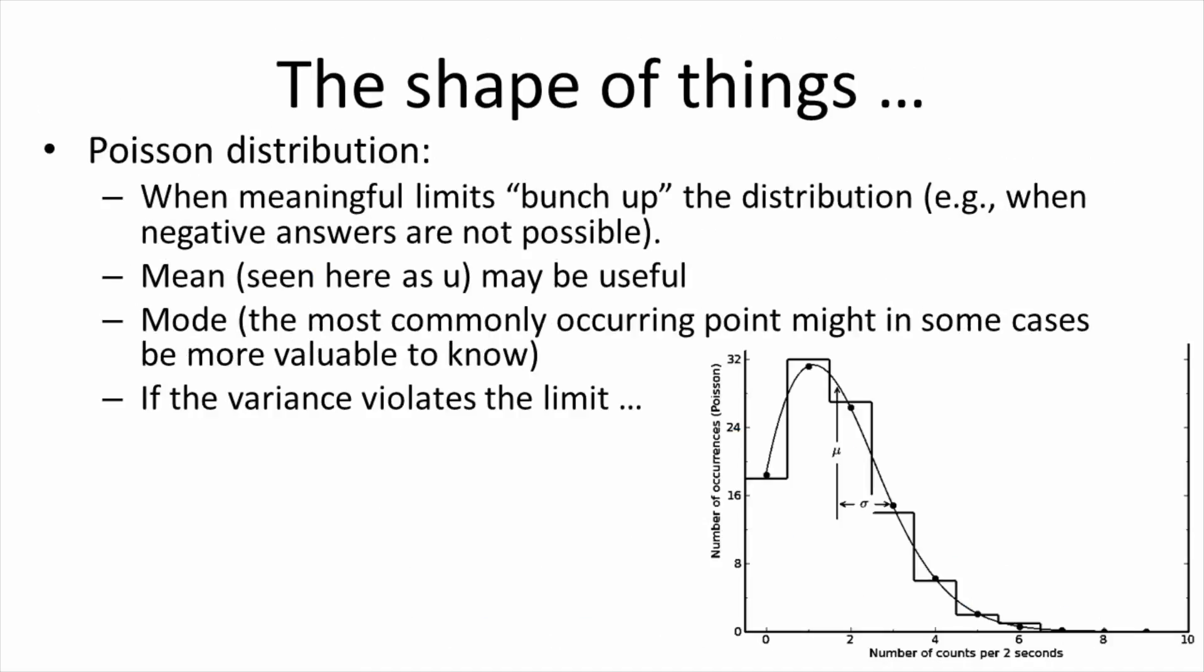Sometimes, when data bunches up against physical realities, say, for example, consider situations where you cannot go below zero, the shape of the data takes on a form where the mean or average value is not equal to the most frequently occurring point. When data takes on a shape like this, it's called Poissonian. In cases like this, it may be more useful to report on the mode or the most commonly occurring point rather than reporting on the mean. There are methods for finding the variance in a Poissonian distribution, and these differ from how one computes the standard deviation in a normal distribution.